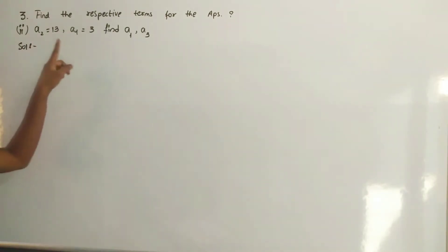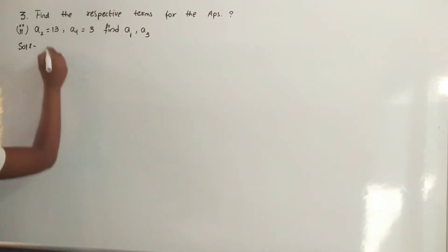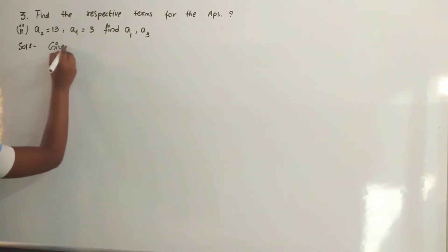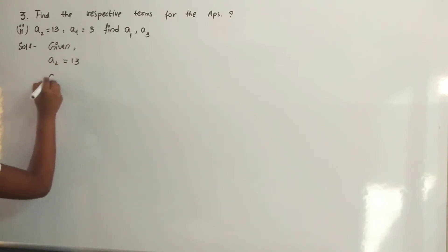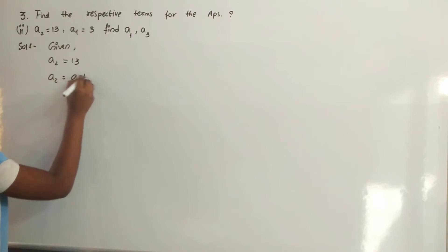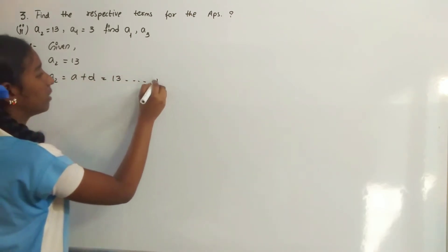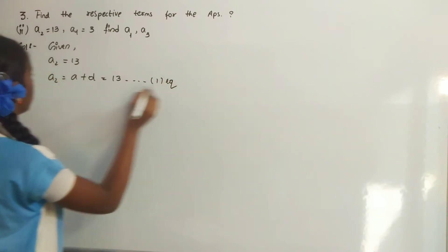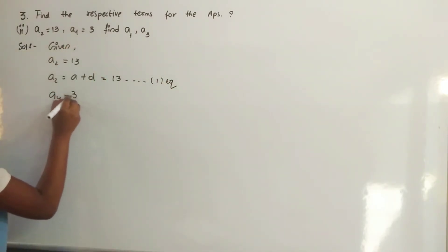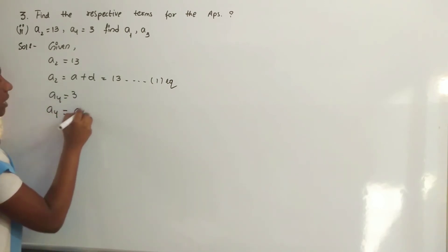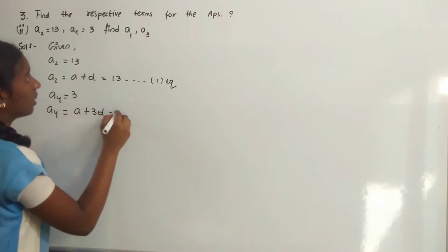A2 is equal to 13. A4 is equal to 3. Find A1 and A3. Given A2 is equal to A plus D is equal to 13 — let it be the first equation. And A4 is equal to A plus 3D is equal to 3.